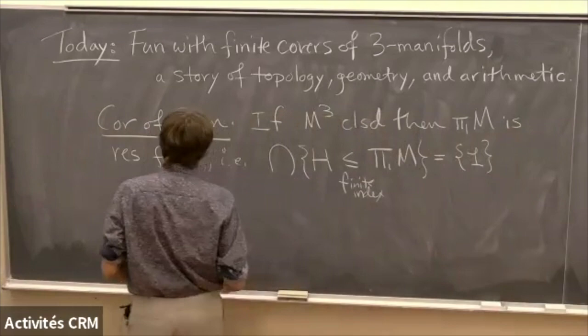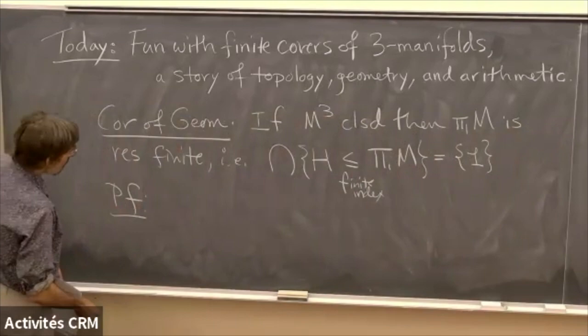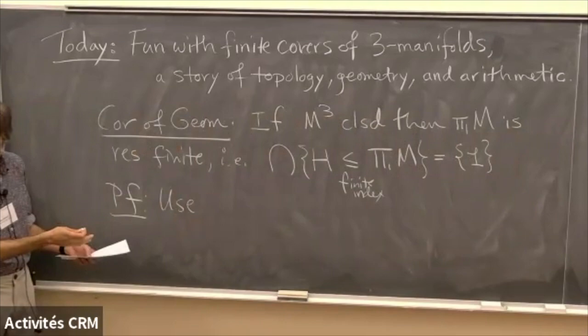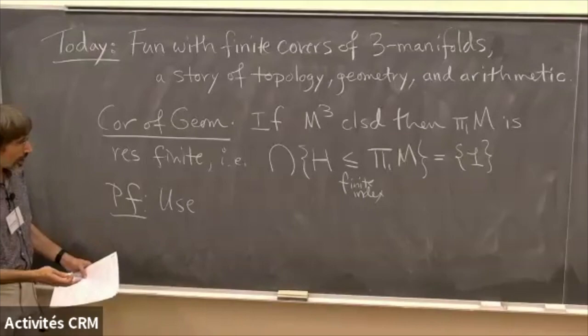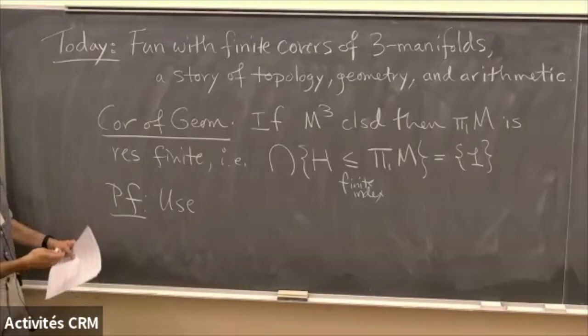I'd like to explain how this is a corollary of geometrization. We start by using the decompositions into prime pieces, and then cut the prime pieces up by those JSJ tori to reduce to the case of geometric pieces. Most kinds of pieces are Seifert fiber — we understand those — so really the hard case is the hyperbolic case.